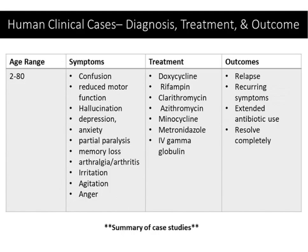This table shows a compendium of human clinical cases, including diagnosis, treatment, and outcome. There are a variety of symptoms associated with Bartonella infection, a variety of different treatments, and multiple outcomes. Patients have been known to relapse, exhibit recurring symptoms, require extended antibiotic use, and of course to resolve completely. However, what is typically taught in medical schools is that the infection is self-resolving.